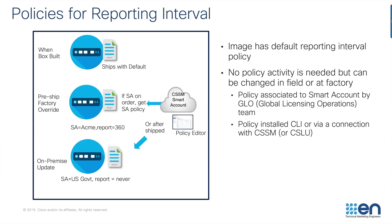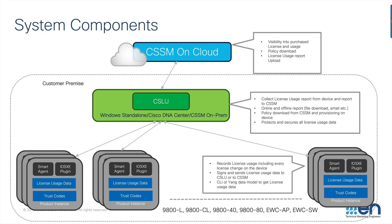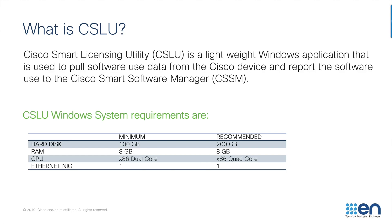The system components are the end devices — in our case the 9800 controllers. This includes the 9800-L, the CL cloud, the 9840, the 9880, as well as EWC on APs and 9K switches. CSLU is a lightweight Windows application that can be used to pull usage records from the 9800 and report that to CSSM. It is a microservice deployed at the customer site and can also run on CSSM on-prem satellite as well as on Cisco DNA Center.